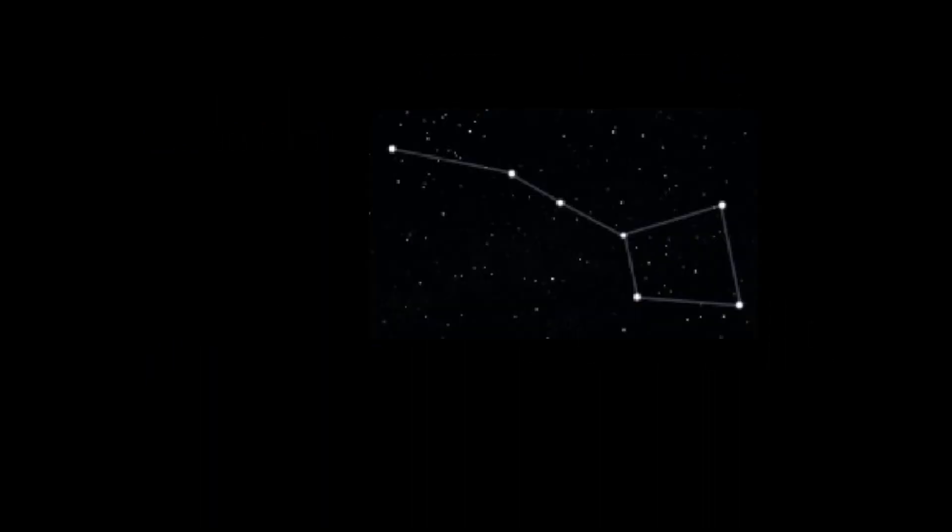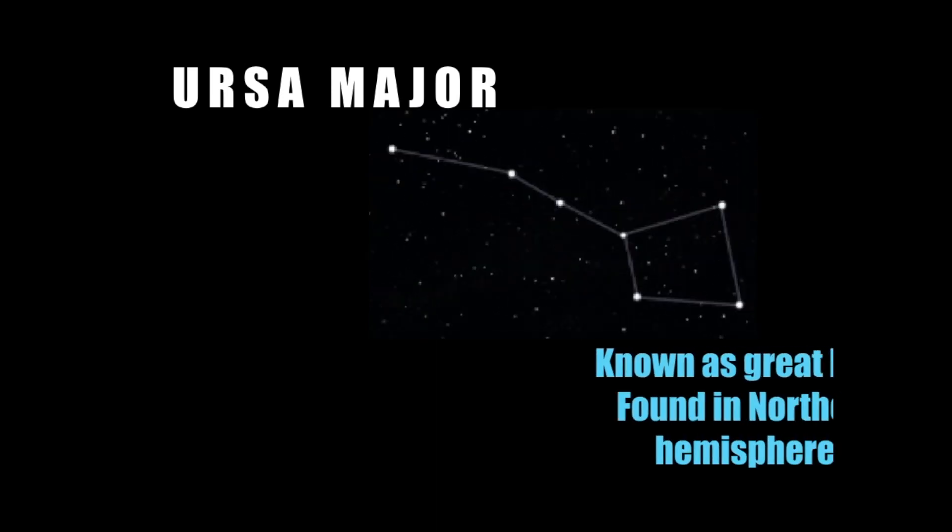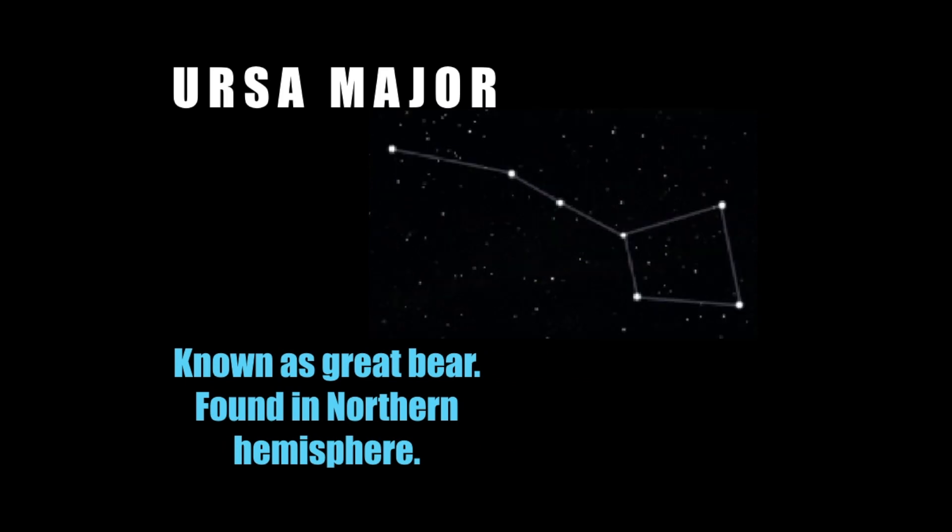Ursa Major is probably the most famous constellation with the exception of Orion. This is known as the Big Dipper. It is made up of seven main stars. It has bright stars called Merak and Dubhe which are used as navigational pointers. They point to the location of the North Pole star called Polaris.